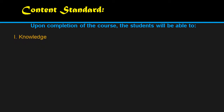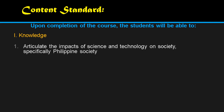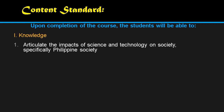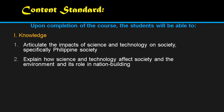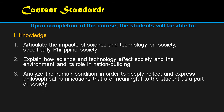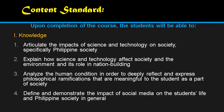For the course standards, upon completion of the course, the students will be able to do the following. First, under knowledge: articulate the impacts of science and technology on society, specifically Philippine society. Second, explain how science and technology affect society and the environment and its role in nation-building. Third, analyze the human condition in order to deeply reflect and express philosophical ramifications meaningful to the students as part of society. Fourth, define and demonstrate the impact of social media on the students' life and Philippine society in general.